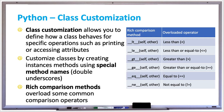In Python, class customization allows you to define how a class behaves for a specific operation, such as printing or accessing attributes. You can customize classes by creating instance methods using special method names with double underscores before and after the method name.